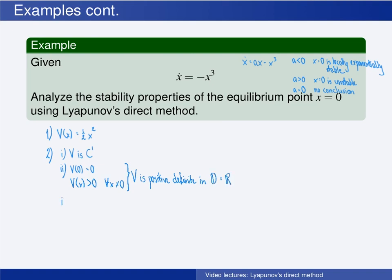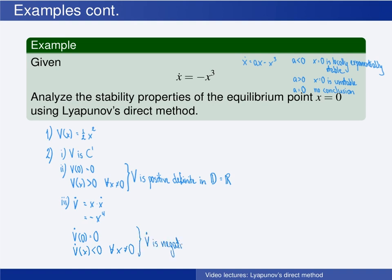The third condition concerns the derivative of V. The time derivative of V is the derivative of V with respect to x, which is x, times the time derivative of x. By the system equation, this equals minus x raised to the 4th power. The derivative of V evaluated at the origin is clearly zero, and the derivative is strictly negative for all other values of x. In other words, the derivative of V is negative definite in the domain D being the whole state space.